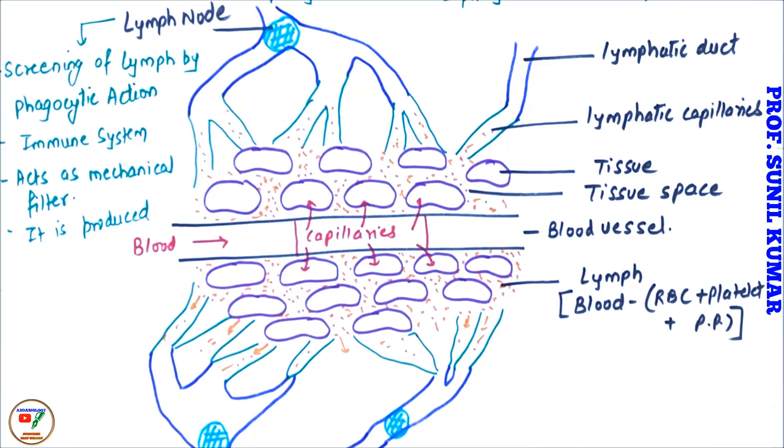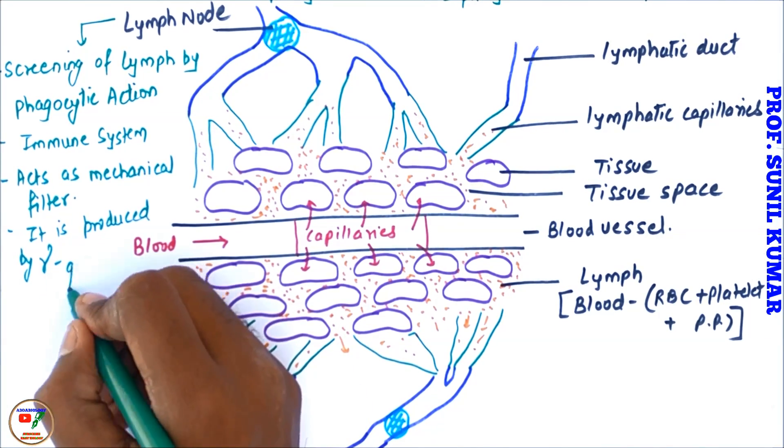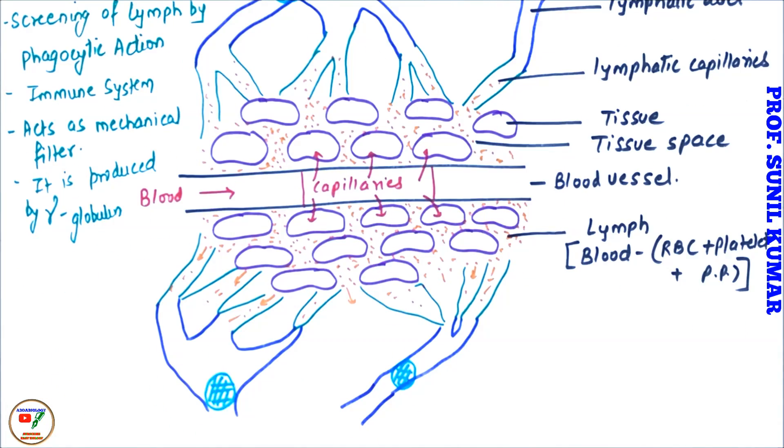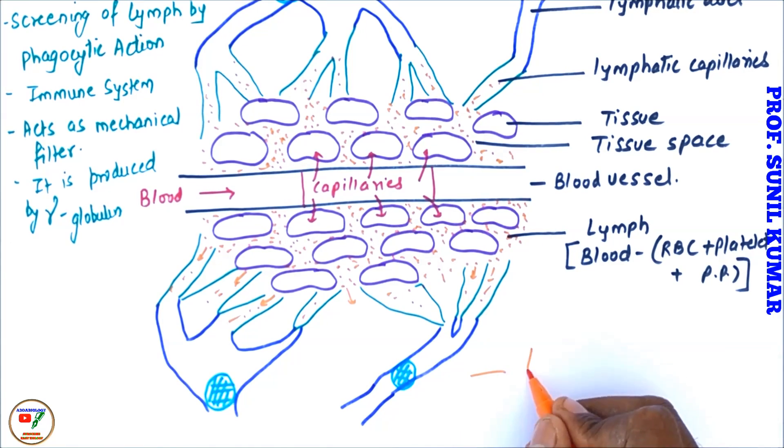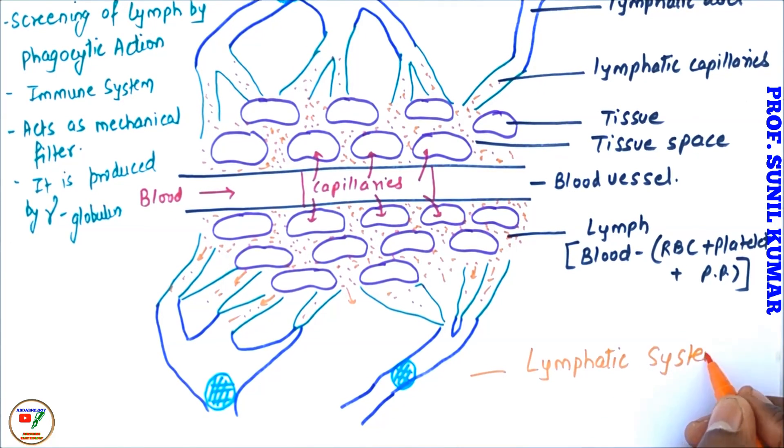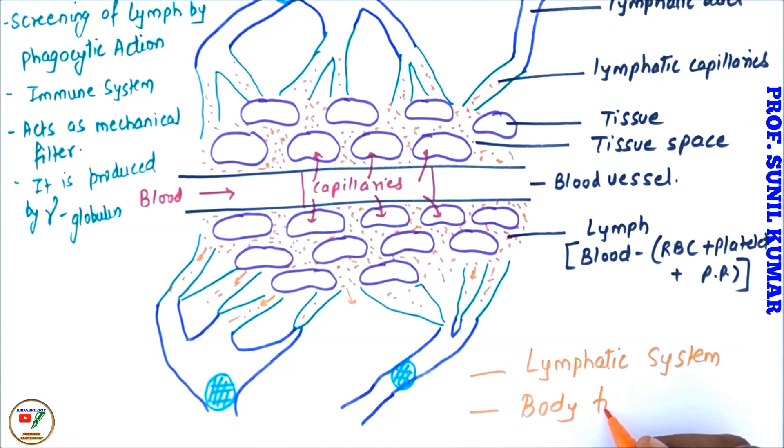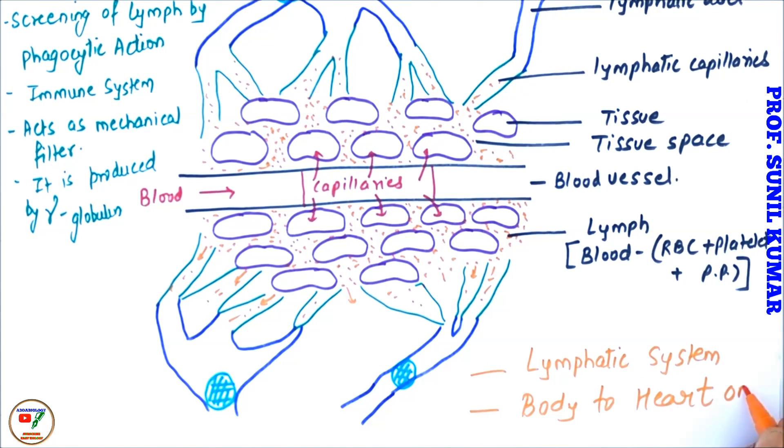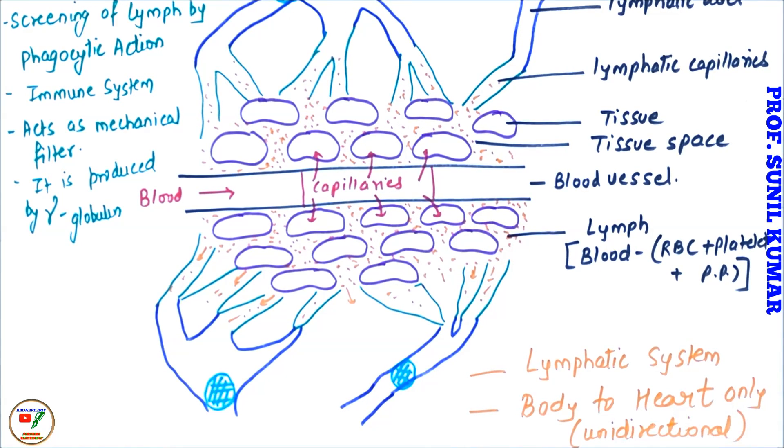Lymph node acts as mechanical filter and it is produced by gamma globulin. So this is all what we should know with respect to the lymphatic system. And most important thing that we need to understand and remember is that it shows unidirectional flow, that is body to heart only. Hope friends you have understood the concept of lymphatic system. Don't forget to give a like. Thank you very much.